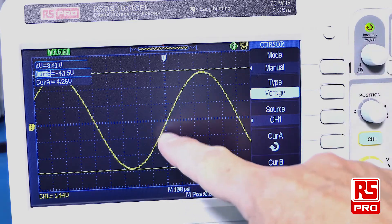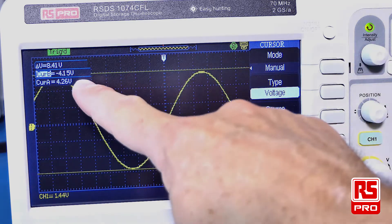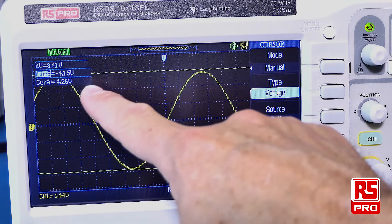Once you have your cursors in place on your signal, you can read off the readings which are displayed in the top left hand corner.